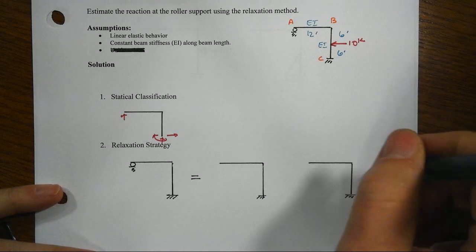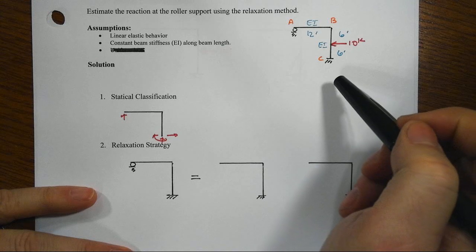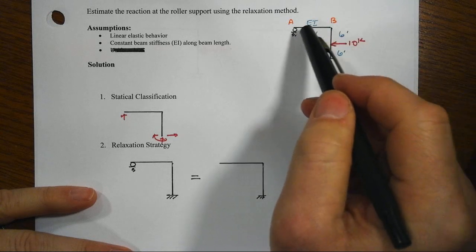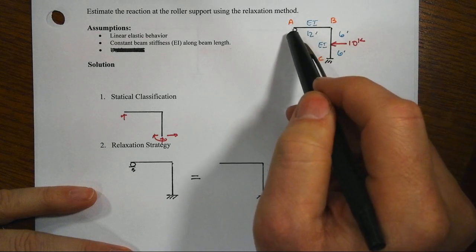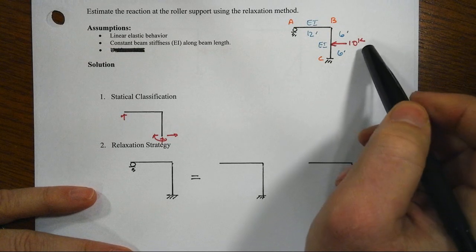All right, we are taking a look at this frame as a column that is fixed at the base and then originally attached to a beam that has a roller support at the left, with a lateral load of 10 kips.